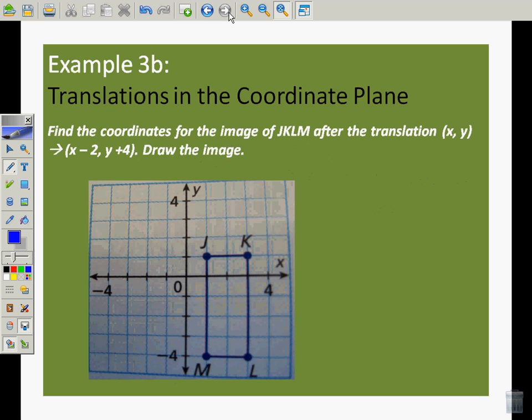Last example. See if you can do this one on your own. I'm going to keep rolling through and do it. I'm going to go left 2, up 4. I go 1, 2, 1, 2, 3, 4, and this is going to be J prime. 1, 2, 1, 2, 3, 4, this is going to be K prime. 1, 2, 1, 2, 3, 4, it's going to be L prime. You just have to remember where you started. 1, 2, 1, 2, 3, 4, and this is going to be M prime. Connect the dots, and we're good to go. You see how that worked.